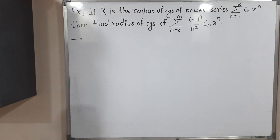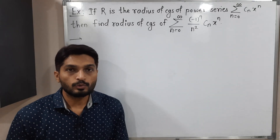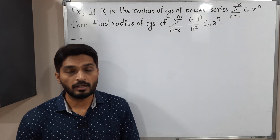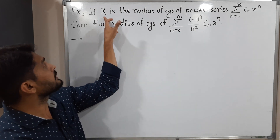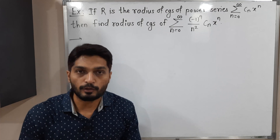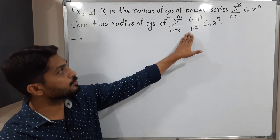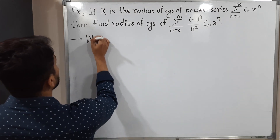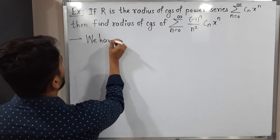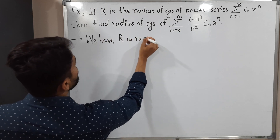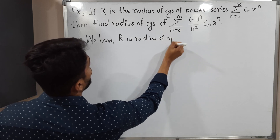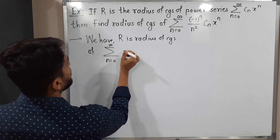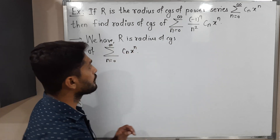In this video we are going to discuss examples of power series. We have a standard power series: summation of cₙ xⁿ, and its radius of convergence is capital R. With the help of this information we have to find the radius of convergence of a second power series.